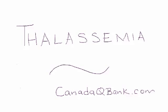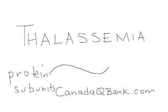In this video I'm going to talk about thalassemia. Thalassemia basically happens when one of the protein subunits of the hemoglobin molecule is not properly synthesized or produced.